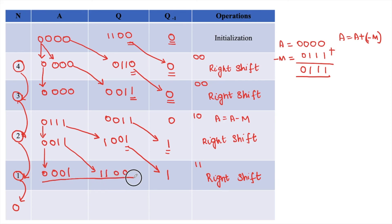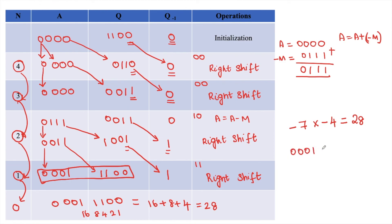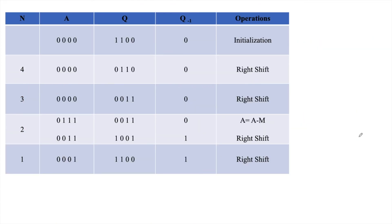The final answer is whatever remains in the last step: 00011100. Calculating the binary equivalent: 16 plus 8 plus 4 equals 28. Our original problem was minus 7 times minus 4, which equals 28. The result 00011100 is the binary equivalent of 28. Both values match, confirming we correctly multiplied two signed numbers using Booth's algorithm. I hope the explanation was clear — thank you for watching.